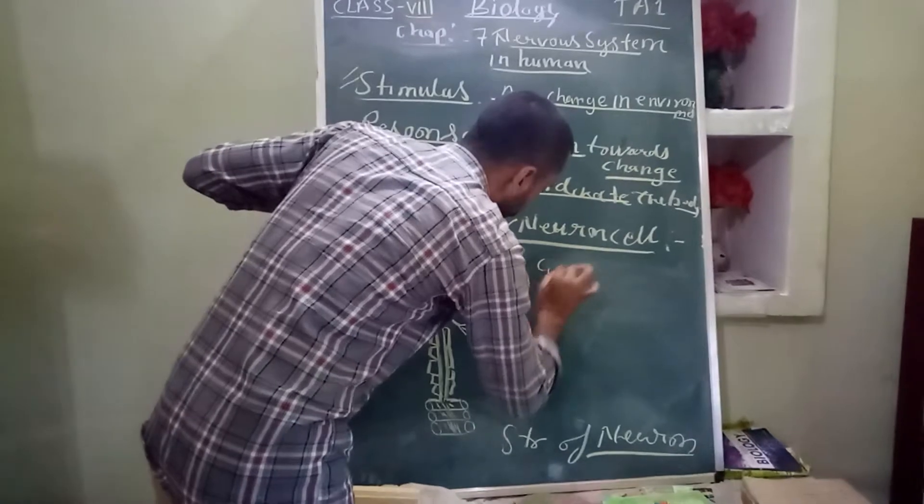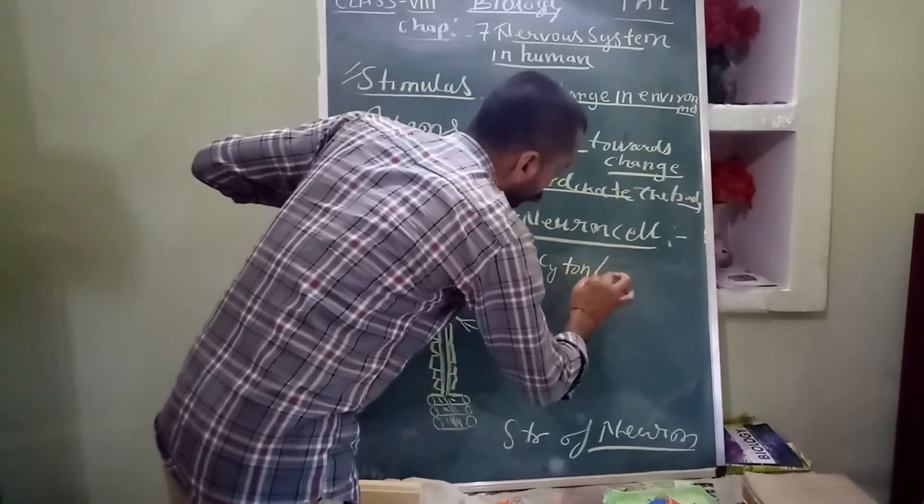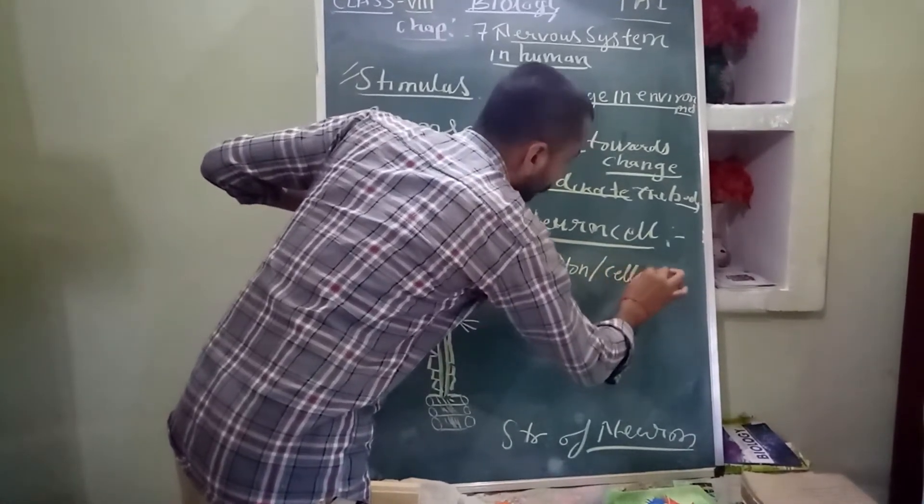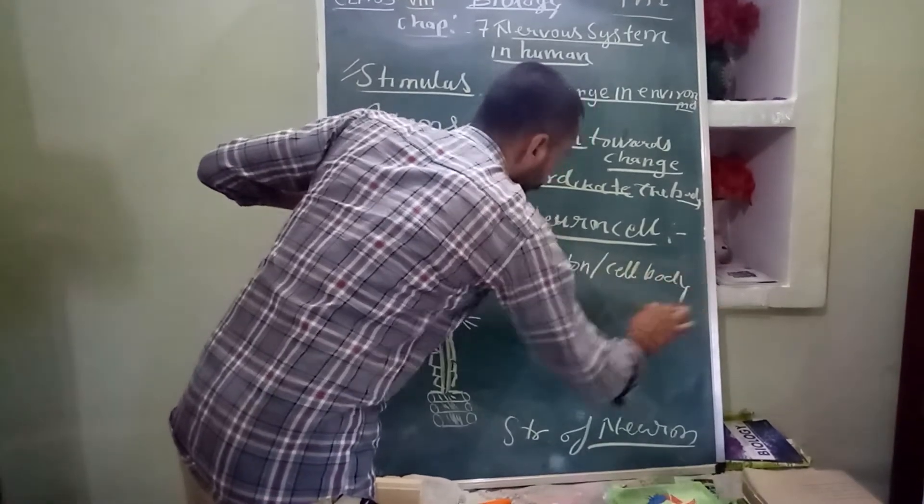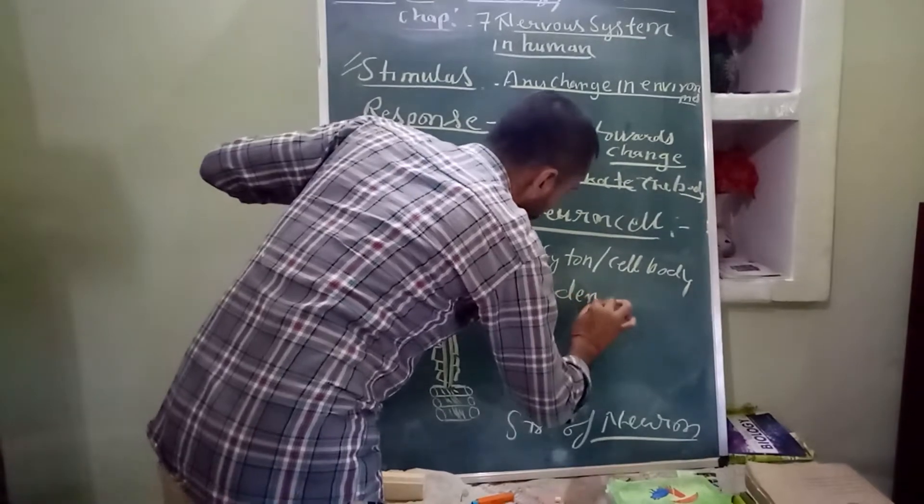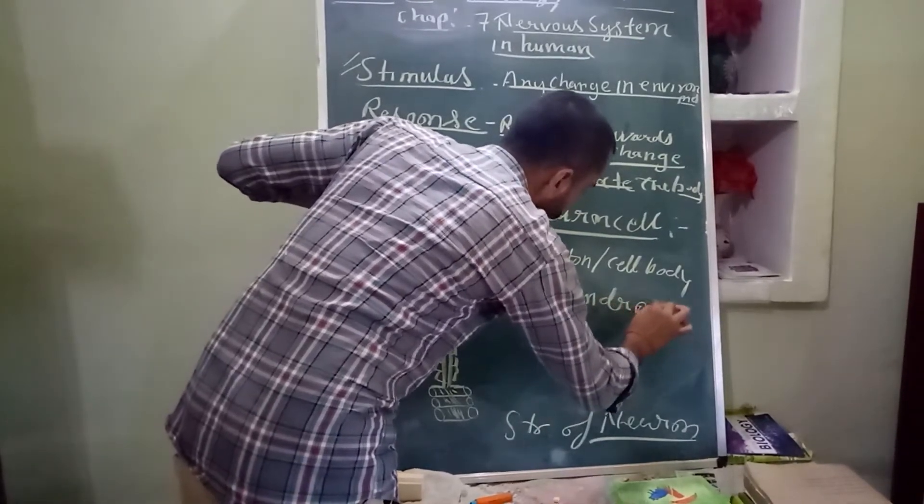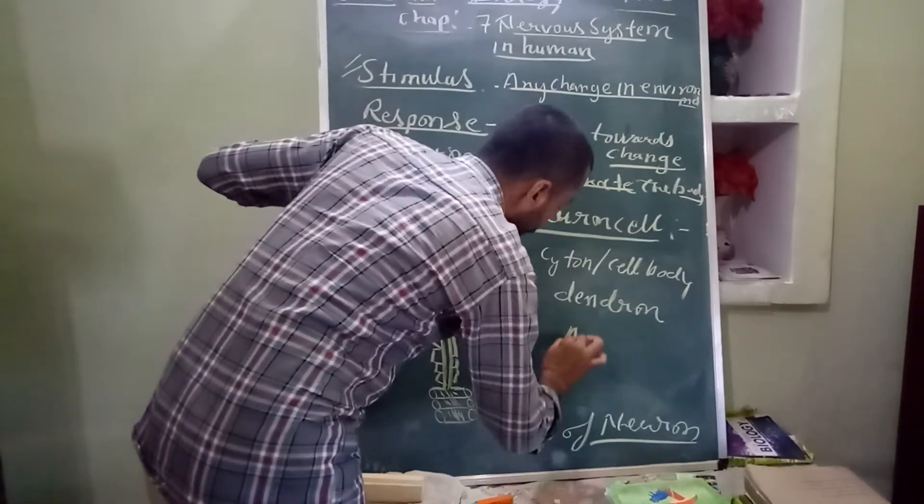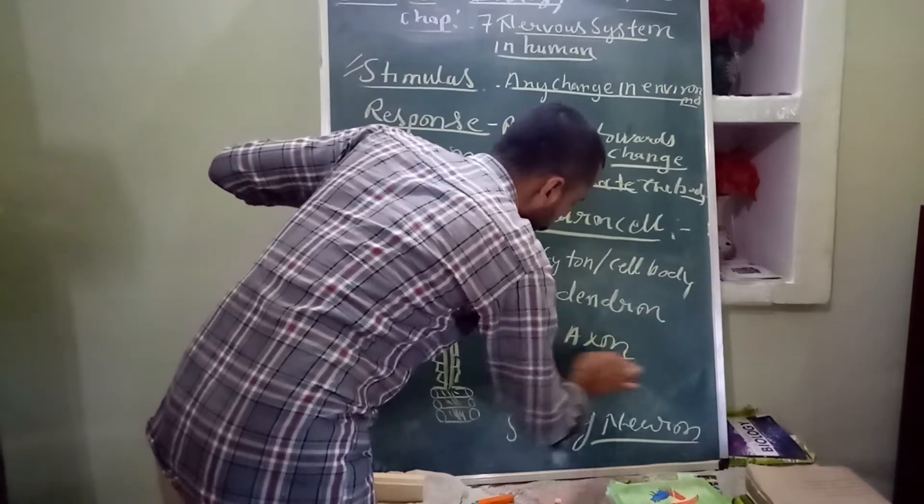First is cytone or cell body. Second is dendron. And third one is axon.